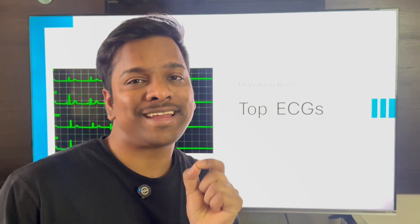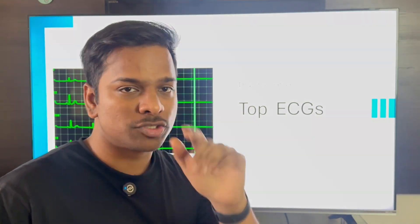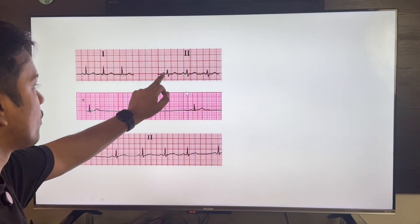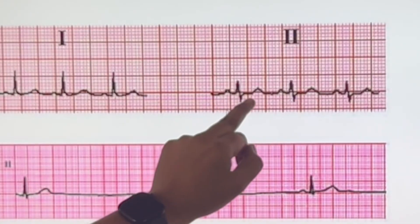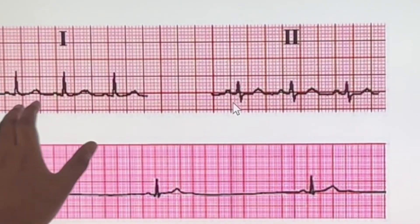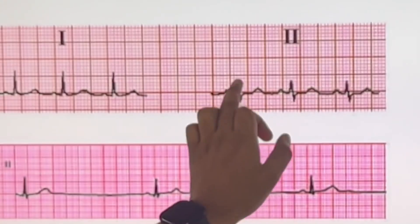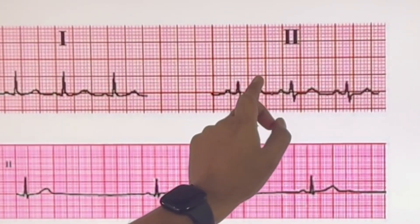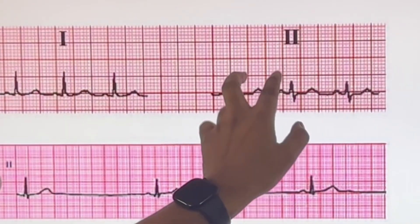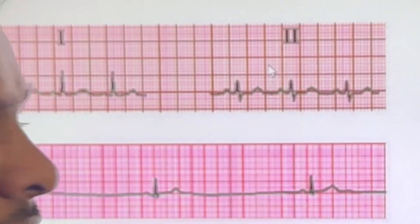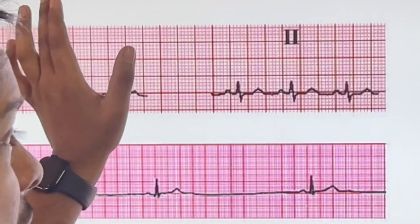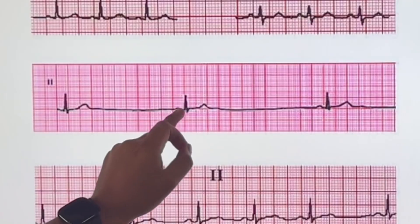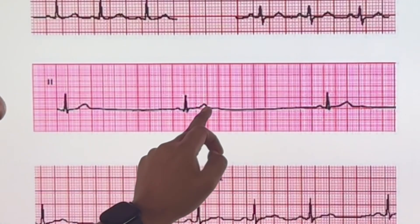Welcome to the top 10 ECGs discussion. In the first ECG, we can see P wave, QRS complex, and ST segment are present. The number of big boxes between two RR waves is about two and a half to three, so 300 divided by 3 gives close to 100. That means this has to be normal sinus rhythm.